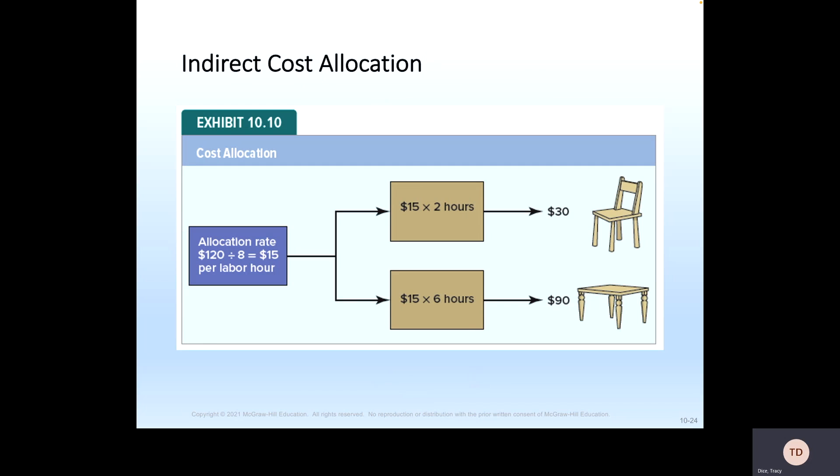Indirect cost allocation, when we have indirect costs, we allocate it using averages, basically. So if we look at these two chairs, if it costs, if we use eight hours of work and it, we used a total of $30 and $90 worth of product, we take our $120 divided by our total hours and we get $15 per labor hour. So that's how we would allocate that cost. And then we would split it up $15. Two hours. So this chair gets $30 and the table gets $90.